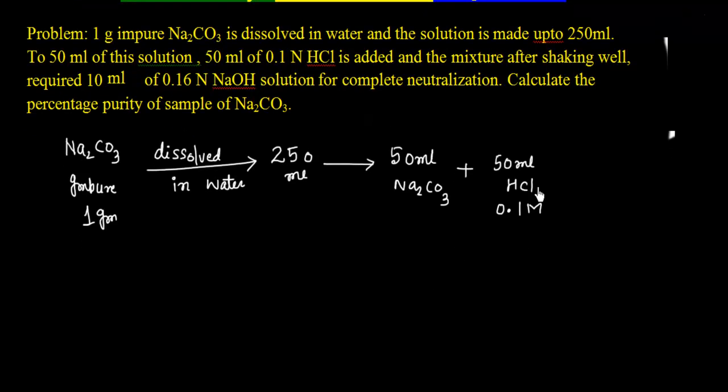Now this solution after shaking well requires 10 ml of 0.16 N NaOH. So this means I have a base, I have an acid, so they will neutralize each other. Remember, if acid is in excess, then only we require some more base to neutralize. This means I can say here I have excess acid that is left.